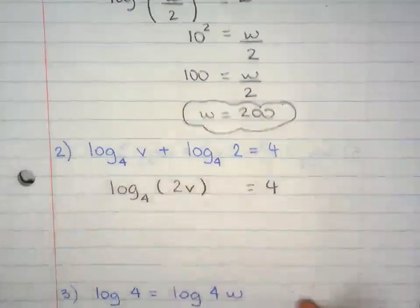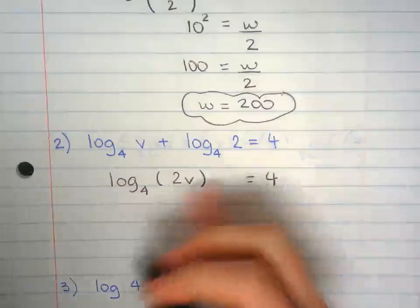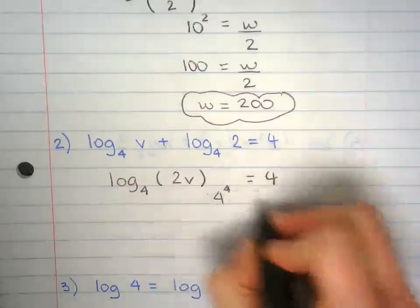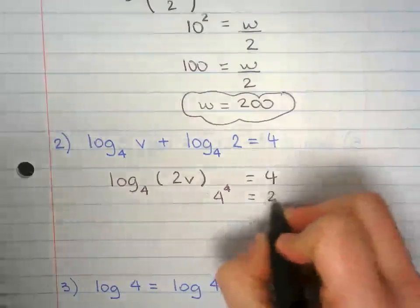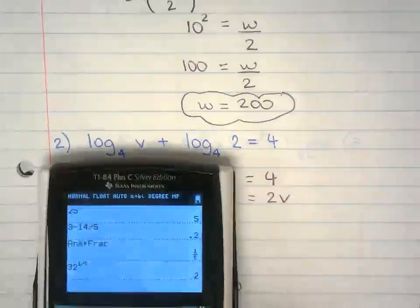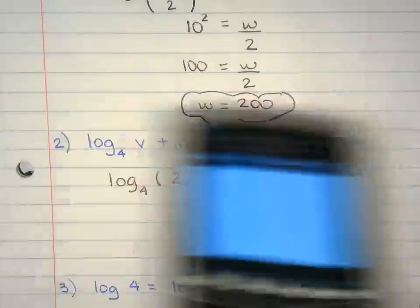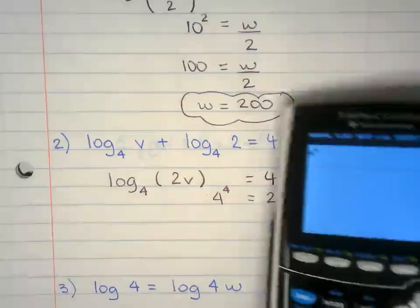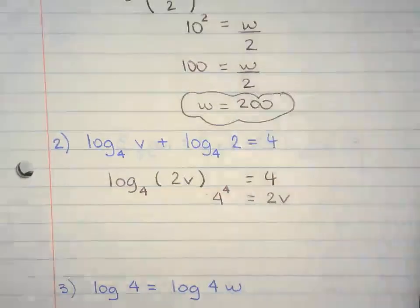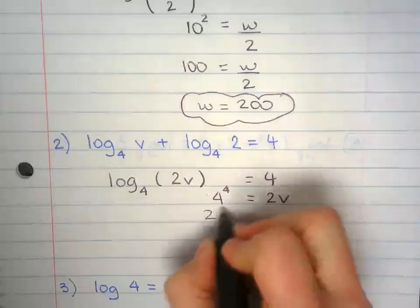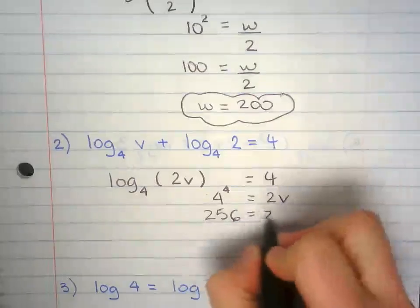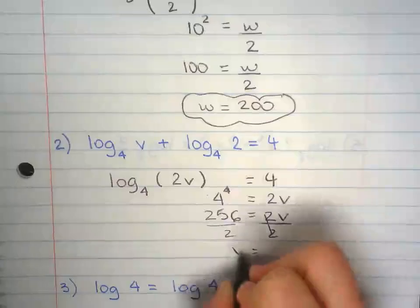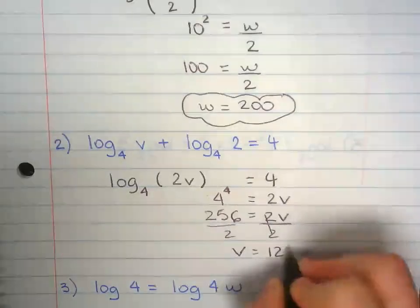Now rewrite this as an exponential function. 4 to the power of 4 equals 2v. 4 to the 4th power is 256 equals 2v. Divide both sides by 2. v equals 128.